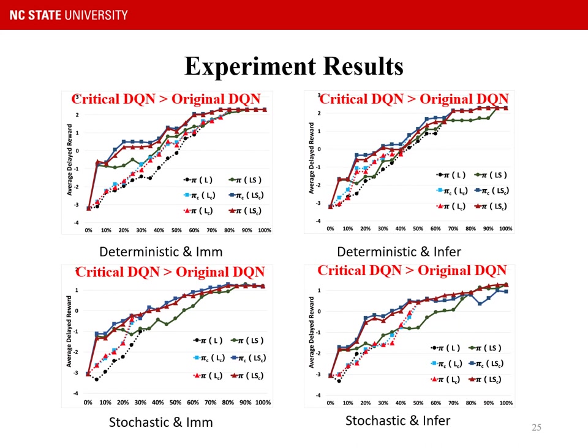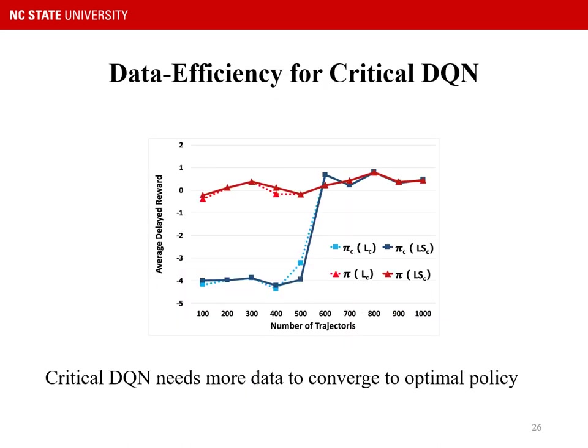However, different from the simulation environment, a major concern for RL in real-world application is data efficiency. So we investigated data efficiency for critical DQN. When the training dataset is less than 600 trajectories, critical DQN performs worse than original DQN. But when there is enough data, critical DQN performs similarly to the original DQN policy. The result shows that critical DQN needs more data to converge to the optimal policy.